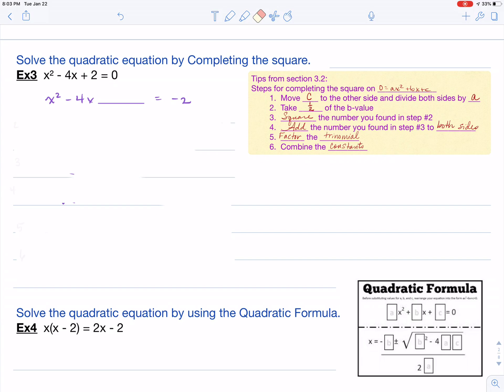Step number two says take half of the b value. You notice here that my b value is negative four. When I take half, that's negative two. I want to square that number, which is going to give me a positive four, and then I want to add that number to both sides. So I'm adding a four to both sides.